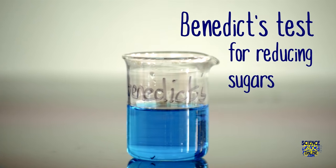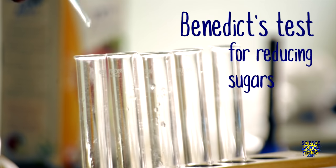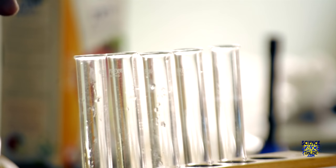The Benedict's test is the test for reducing sugars. Glucose is an example of a reducing sugar. First you take your Benedict's reagent and you add it dropwise to each of your samples.